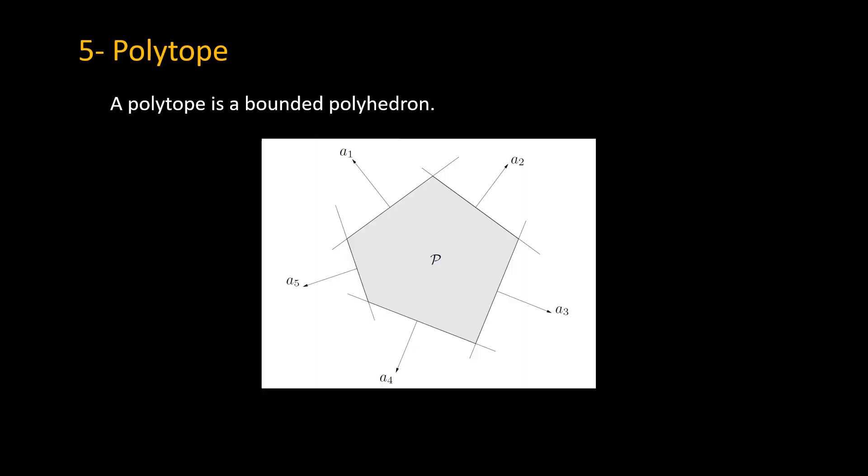Well, we have a word for a polyhedron that is bounded, and we call it a polytope. So a polytope is a bounded polyhedron, like this picture which is the intersection of five half spaces and is bounded. So we call this polyhedron P a polytope.